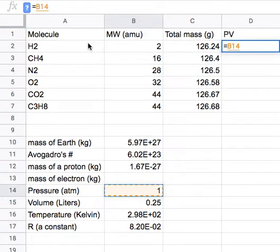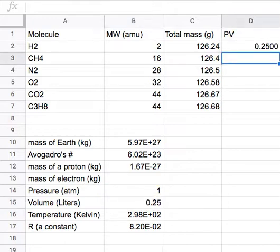Now I'm going to put an asterisk because I want to multiply that by the volume, which is in cell B15. As you can see, I get the same answer.